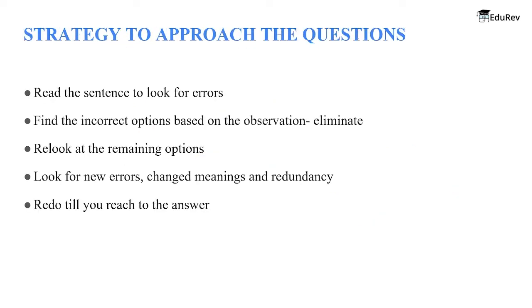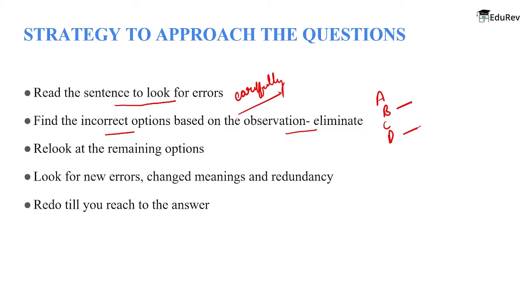What is the strategy to approach the questions? First, read the sentence carefully to look for errors. Second, find the incorrect options based on observation and elimination. If options are given, look for which ones would not be correct — for example, options B and D may not be appropriate, so cancel them out. That leaves us with options A and C, from which we look for the most appropriate one.